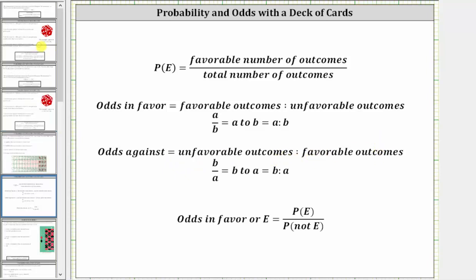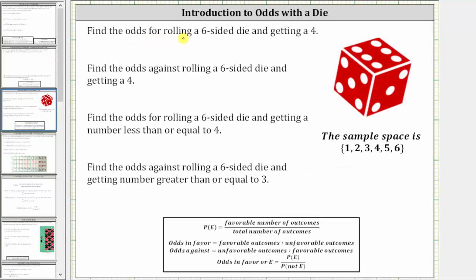Going back to our examples, we first want to determine the odds for rolling a six-sided die and getting a four, which means we're looking for the odds in favor of getting a four. Looking at the sample space, there is one favorable outcome — the four. All the other numbers are unfavorable outcomes, so there are five unfavorable outcomes. Therefore, the odds in favor of getting a four are one to five, which can be expressed as a fraction, using the word 'to,' or using a colon.